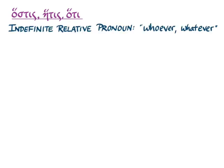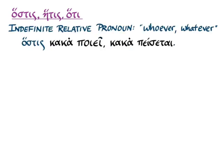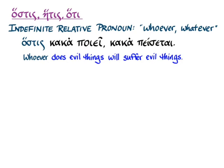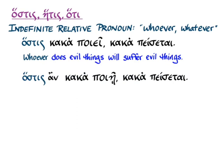Now let's see how we can use this as an indefinite relative pronoun. ὅστις κακὰ ποιεῖ, κακὰ πείσεται. Whoever does evil things will suffer evil things. I don't know who it is, but I'm saying whoever does this will suffer these things. You can see this also with ἄν and the subjunctive, which gives two ways for that ὅστις to be indefinite. It increases the indefiniteness of this statement.